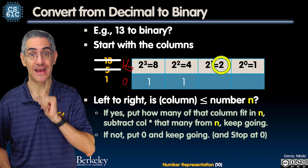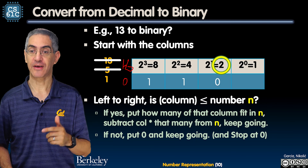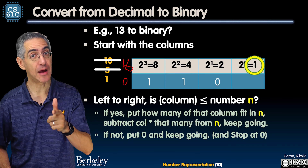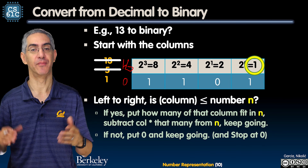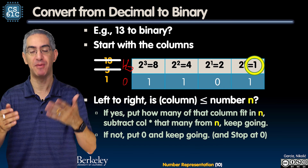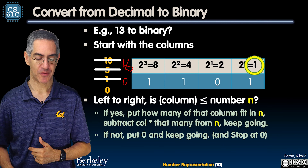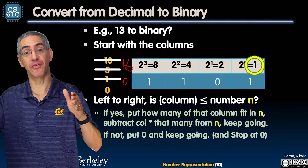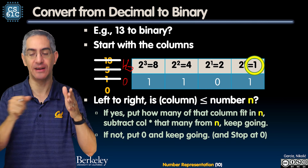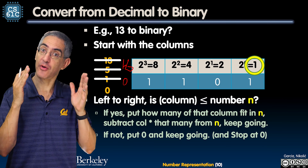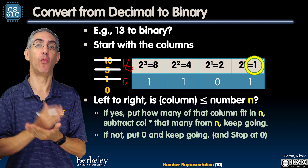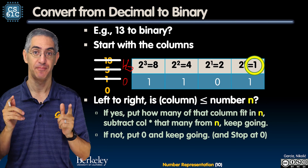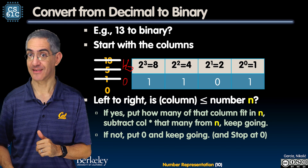Every base is base ten. An alien says 'there are 10 rocks.' The astronaut says 'you must be using base 4.' The alien says 'no, I use base 10.' In every base, there is a 10. In binary, 10 is 2. In decimal, 10 is ten. In hexadecimal, 10 is 16. Every base has a 10, and every base is that base.